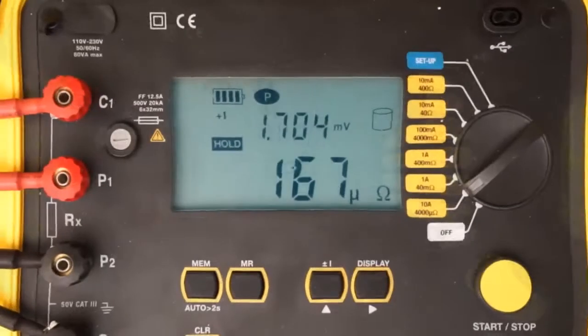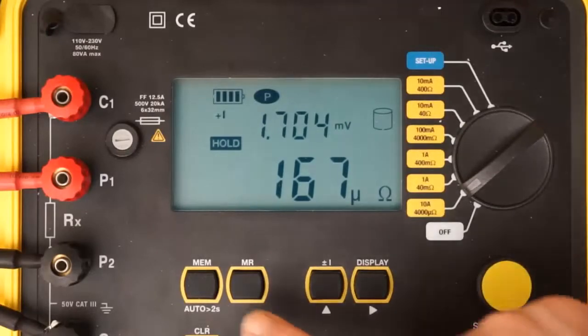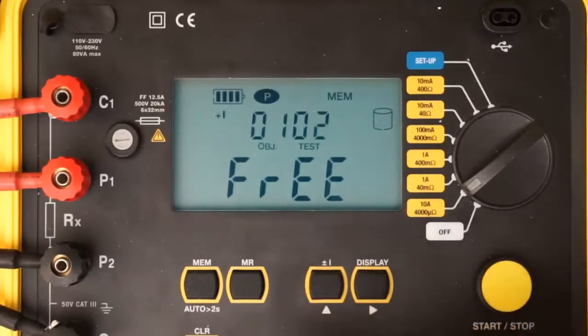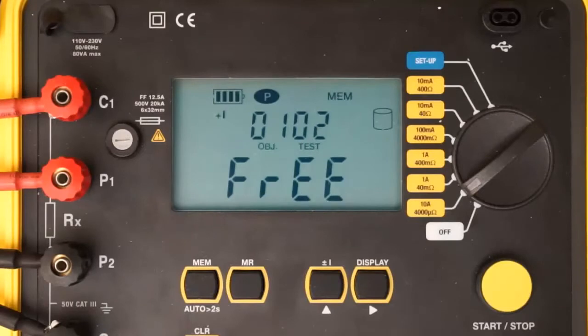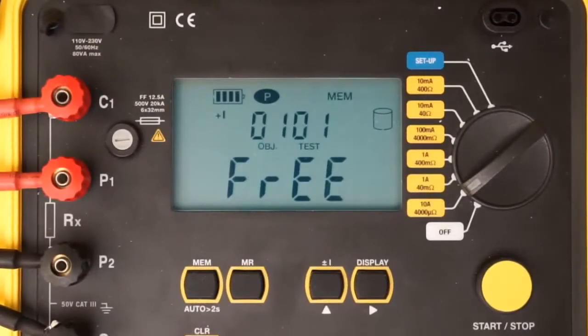To save the stopped test in the instrument's memory, press the memory button. This displays the default object number and test number under which this test will be saved. An object can contain multiple tests, similar to a folder containing multiple files. You can accept the displayed object and test numbers, or change them by pressing the up button, and then using the up and right buttons to make changes. To save the test to memory, press the memory button and hold it down until the word done appears.